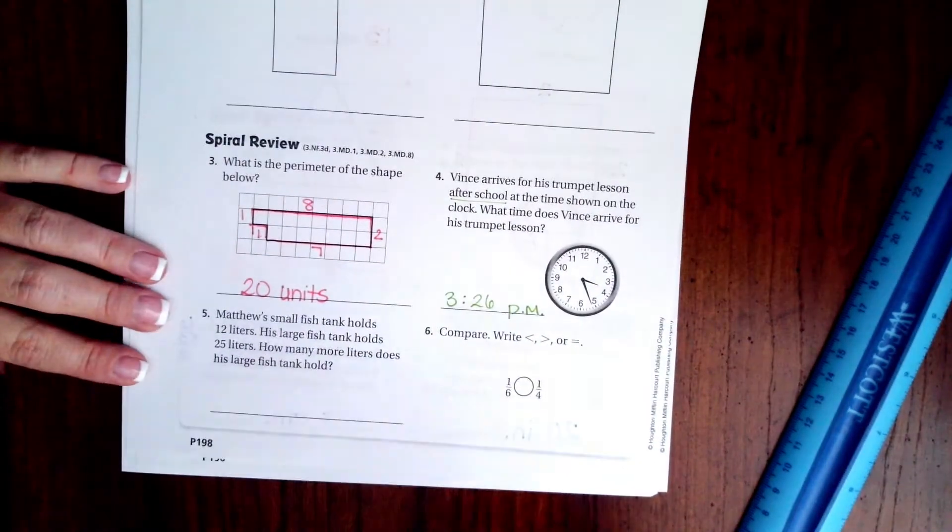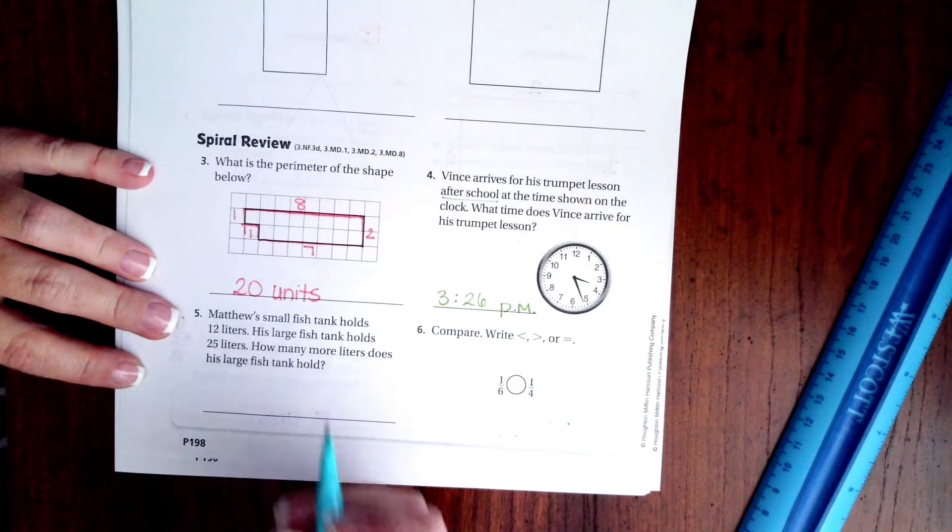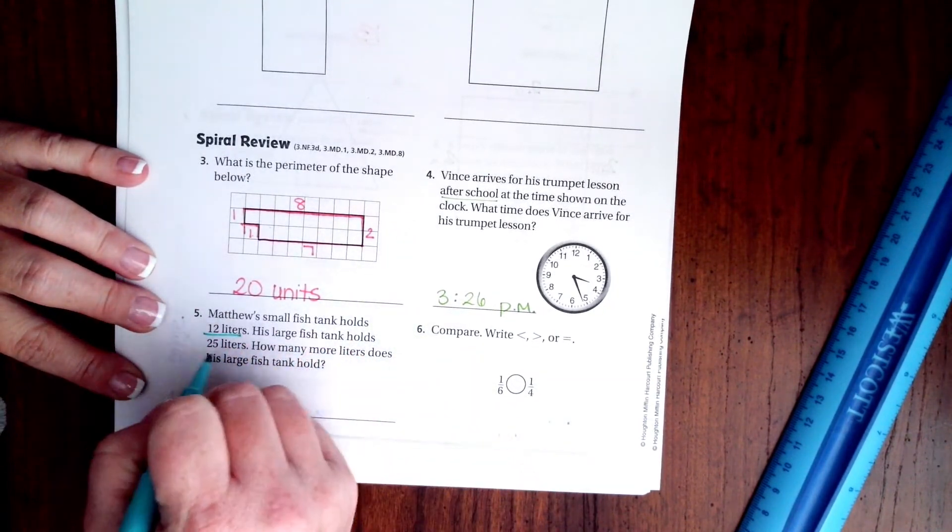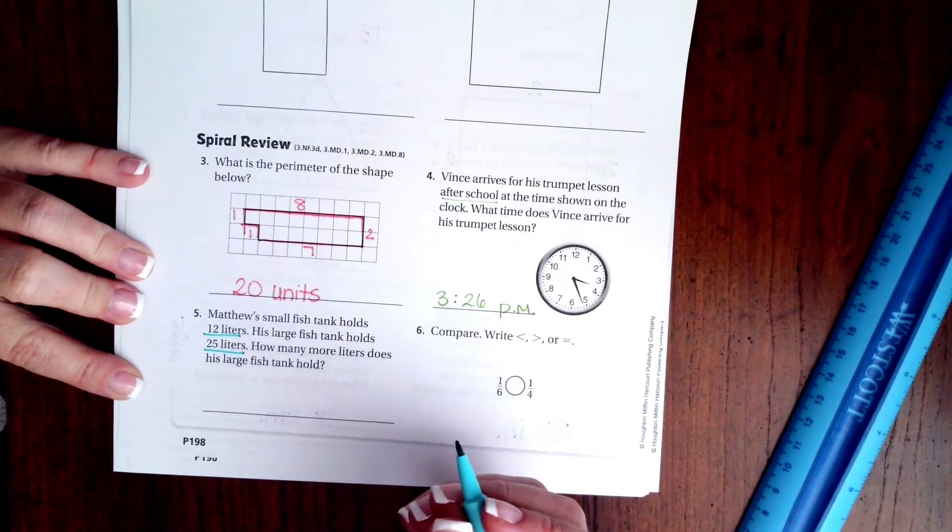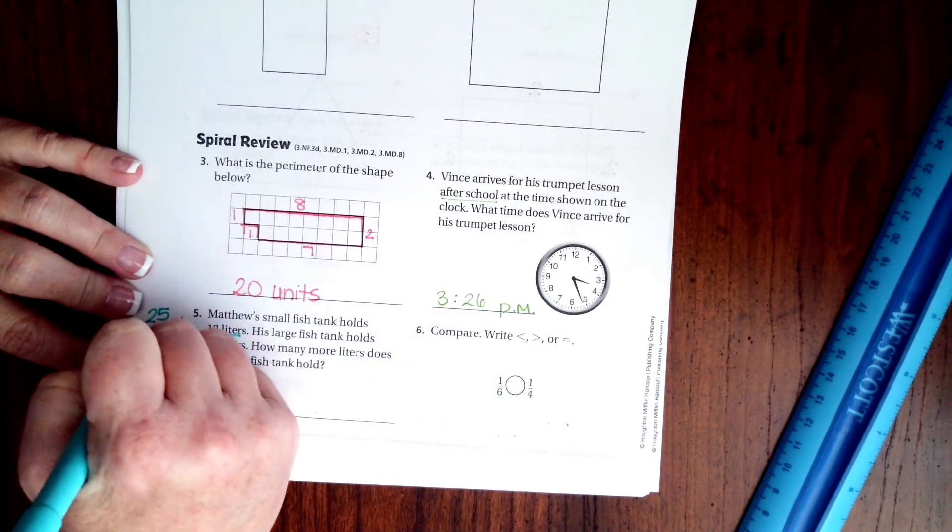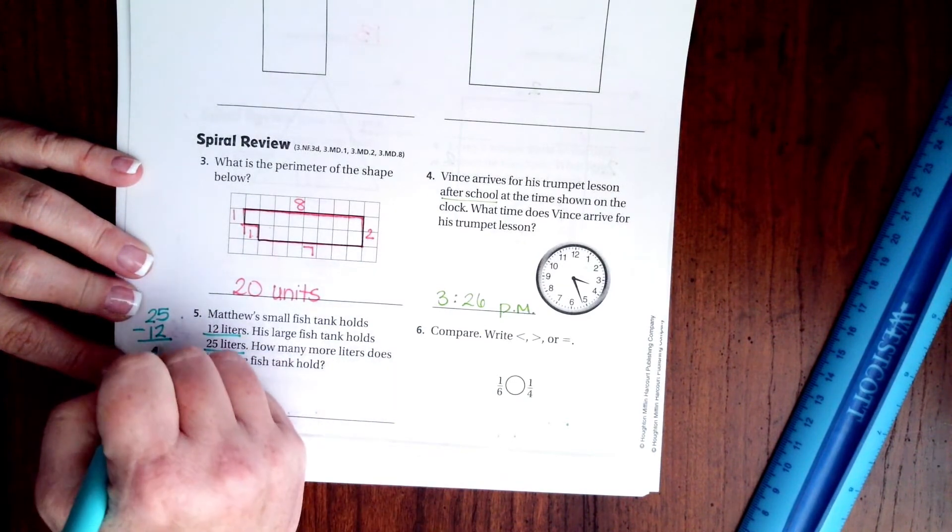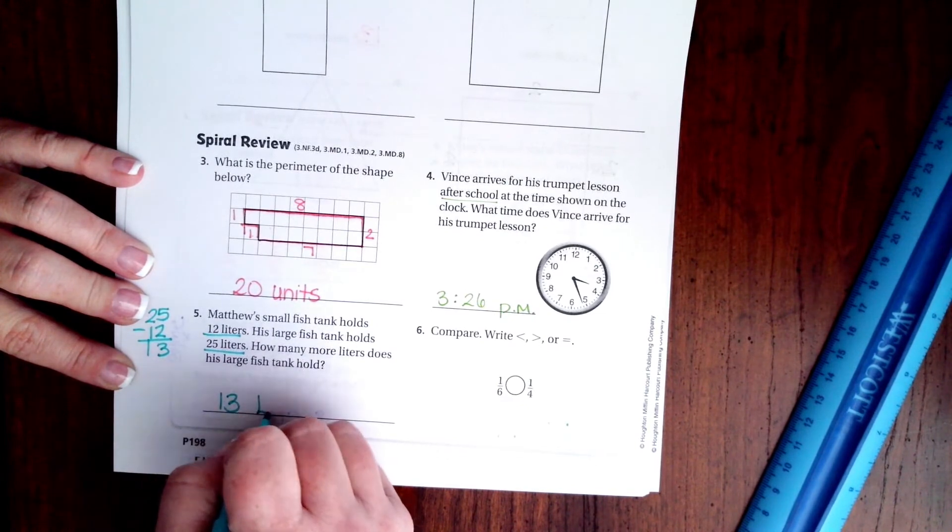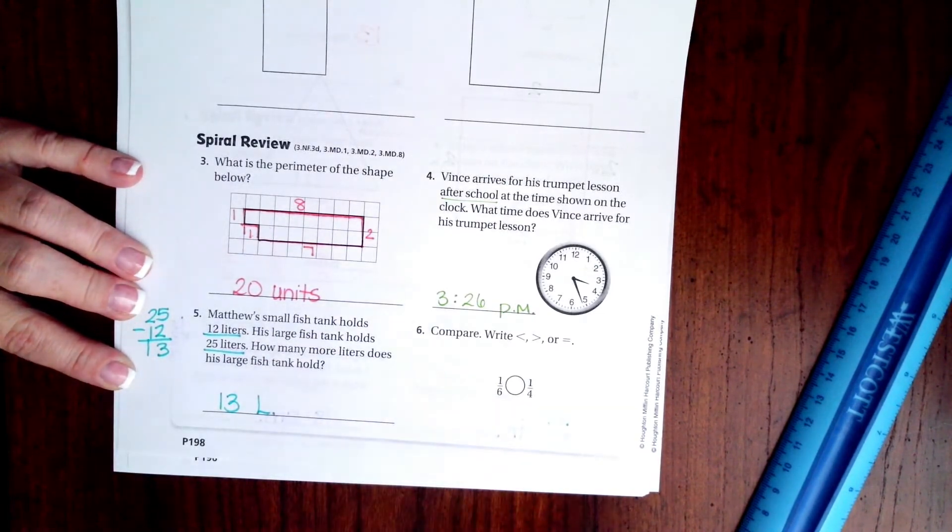We're going to go down and do number five. It says Matthew's small fish tank holds 12 liters, his large fish tank holds 25 liters. How many more liters does his large fish tank hold? So 25 minus 12. Well, five minus two is three, two minus one is one. That is 13 liters, you can just put a capital L.